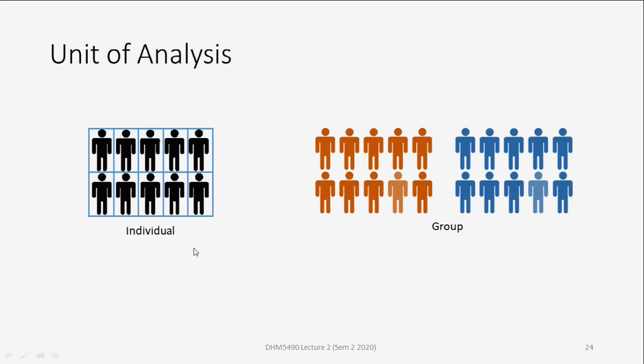In this slide, you can see that there are individual and group. What are the differences? There are 10 persons here in the individual, and there are 20 persons here in the group. I want to tell you the definition of unit of analysis first. The unit of analysis is the entity that is used in a study — that is the basic unit of study.